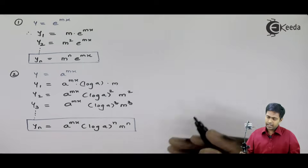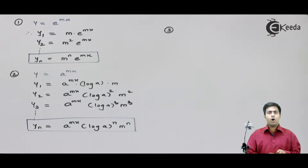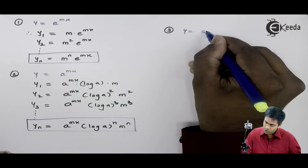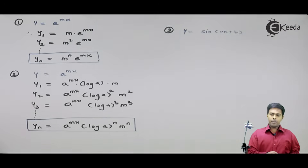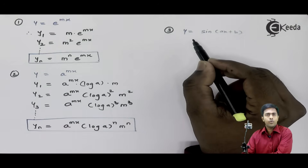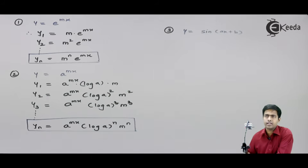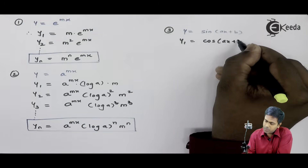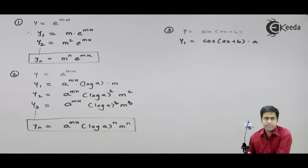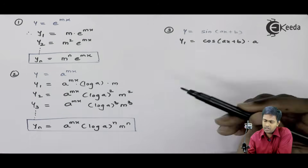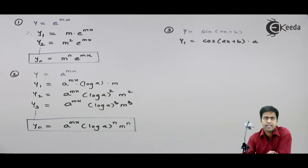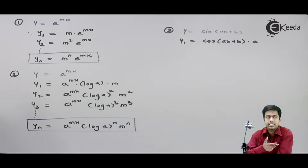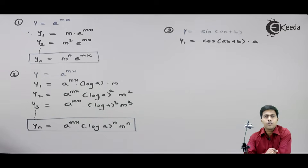Now let us find out the next nth derivative. I am considering a trigonometric function. Let us say y is sine of (ax + b). Be careful — if I want to find the nth derivative, I will again start with y1, y2, and y3. So y1 will be: the derivative of this is cos of (ax + b) into a. Now, if I find y2 from y1, the derivative of cos gives minus of sine. And from y2, if I find y3, it will be cos again. Hence, it changes like cos, sine, cos, sine.